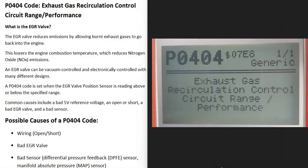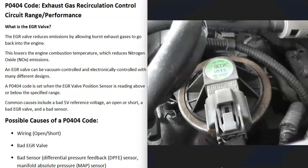Today I'm talking about the P0404 code — what it is and how you go about fixing it. A P0404 code is an exhaust gas recirculation control circuit range performance. Basically, engines have what's called an EGR valve.